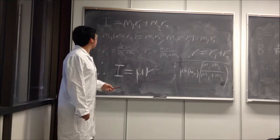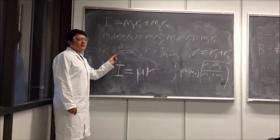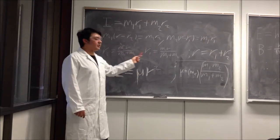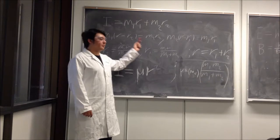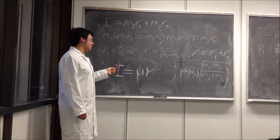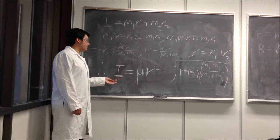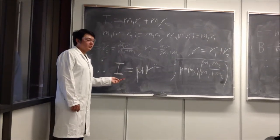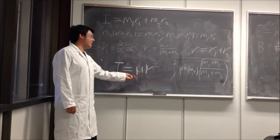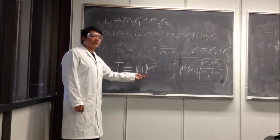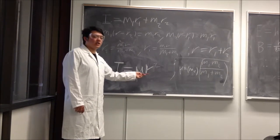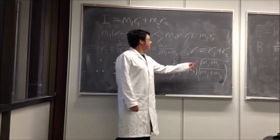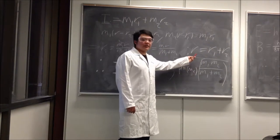We also have R1 and R2, which represent the length from the center of mass to the atom itself. Using these equations, we can reconfigure this moment of inertia equation into this right here, which is moment of inertia equals reduced mass multiplied by R squared. Note that R is basically the bond length.